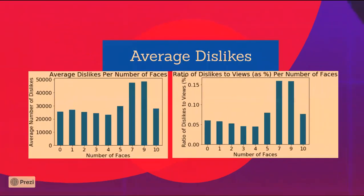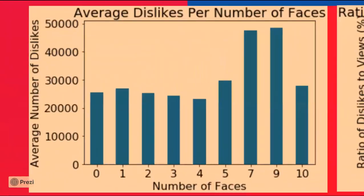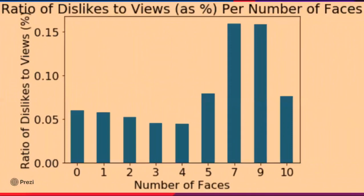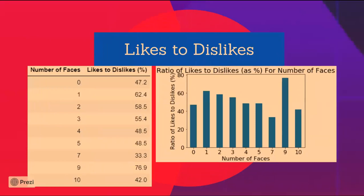I then plotted the average dislikes per number of faces. Thumbnails with 7 and 9 faces have the highest average number of dislikes. When plotting the ratio of dislikes to views, 7 has a marginally greater ratio than 9, even though 9 has higher average dislikes. Finally, the ratio of likes to dislikes shows that, with the exception of 9, the fewer faces on the thumbnail the higher the ratio. Ideally there should be just one face — presumably Mr. Beast's own face — so viewers can quickly recognize the thumbnail.